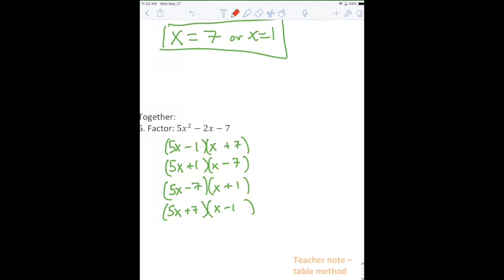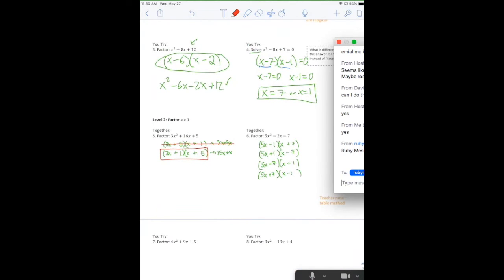If you think you get it, chat me either choice one, choice two, choice three, or choice four. Send it right in the chat. Ruby, how did you know it was choice three?